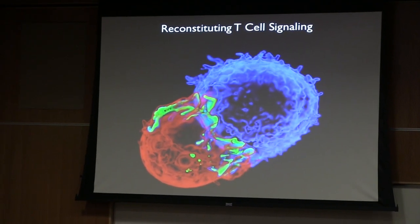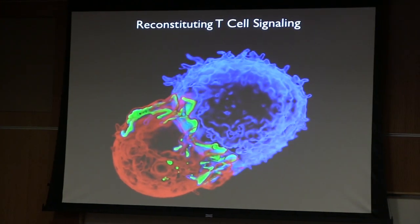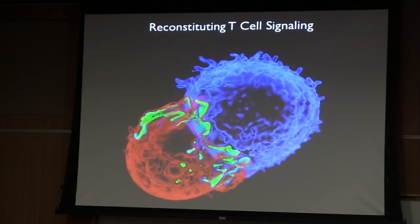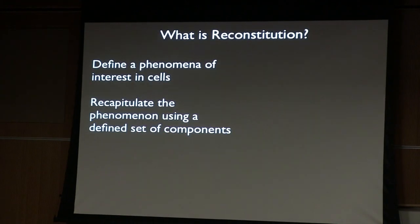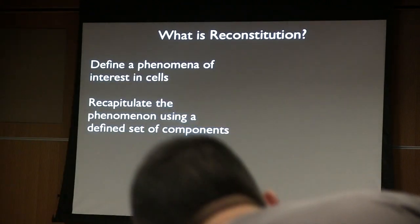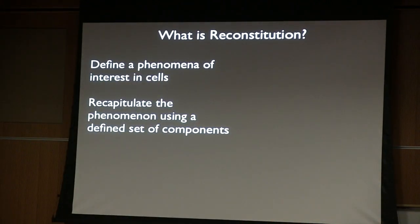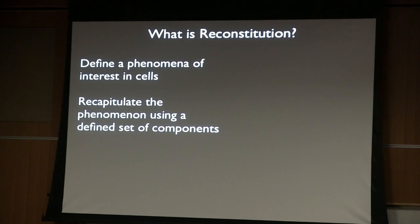The general topic of this talk is efforts to reconstitute elements of the T cell signaling system. But maybe I'll just start with a word of what reconstitution is. Reconstitution has had a very important role in the history of biochemistry and biological research in the 20th century. The paradigm goes something like this: we should always start with cells because that's what we're trying to understand.